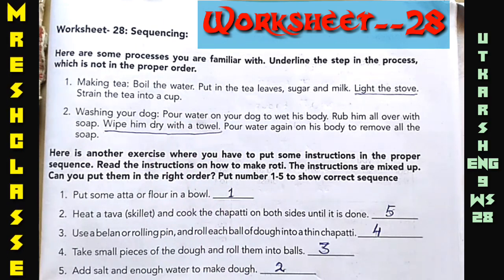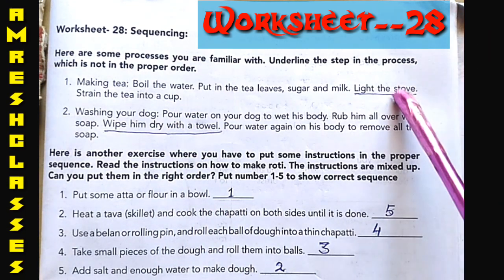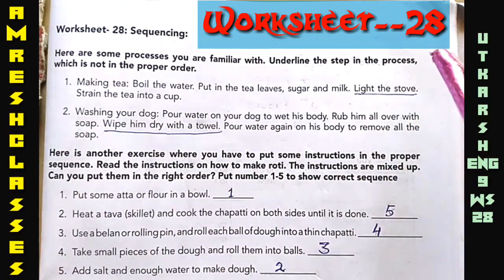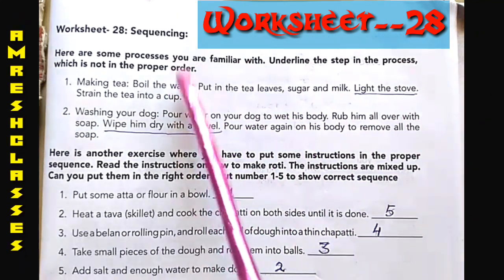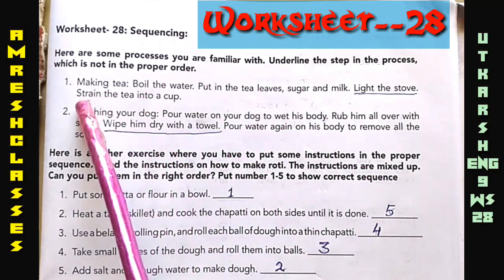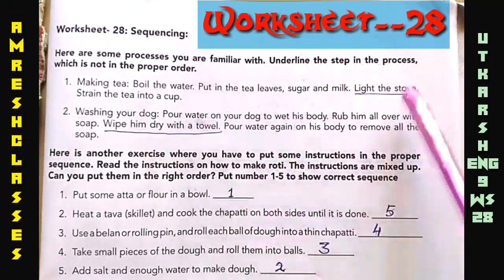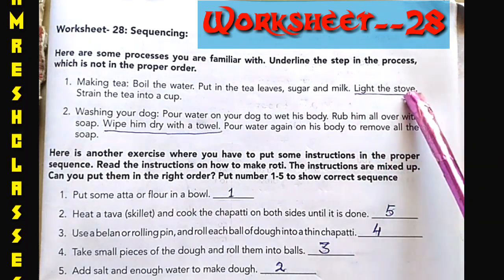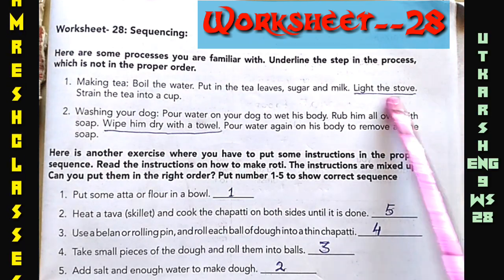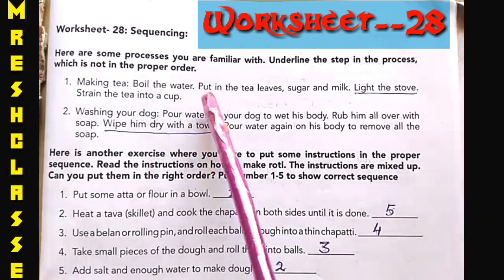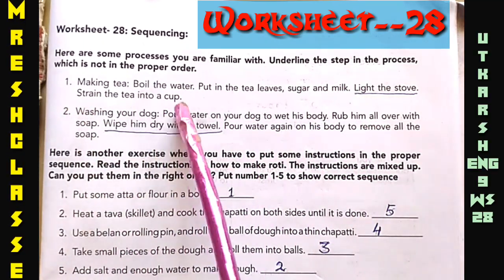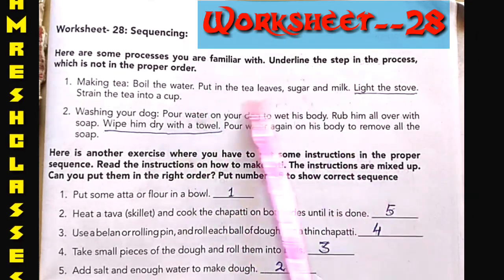Here, in the third step it is given 'light the stove.' First of all, you think — first we have to light the stove, then boil the water, then put in the tea leaves, sugar and milk, then strain the tea. So 'light the stove' is in the wrong position. The correct order is: light the stove, then boil the water, then put in the tea leaves, sugar and milk, then strain the tea into the cup.